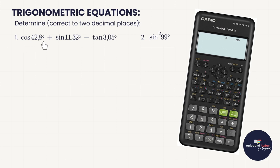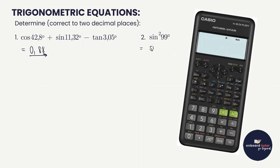The first example is straightforward — to two decimal places, we literally type it in. So cos 42.8 plus sin 11.32 minus tan 3.05, punched into my calculator, gives an answer of 0.88 to two decimal places.